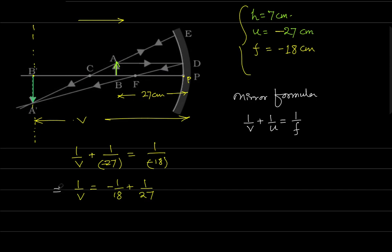You can see how to write this. 1 upon v, if you take 18 and 27, the LCM is 54. So 54 divided by 18 is 3, so it is minus 3 plus 2. So v is minus 54 cm.